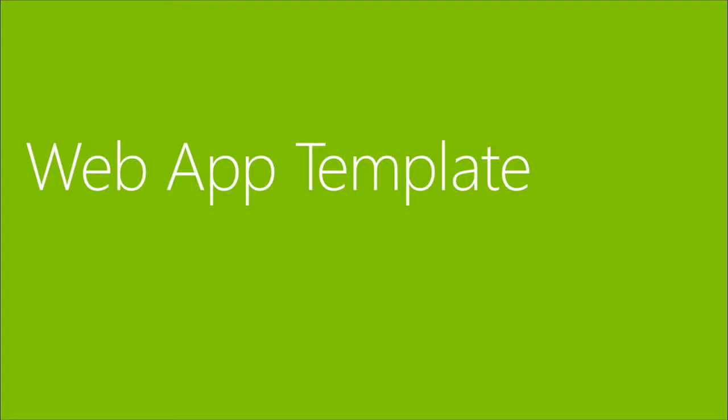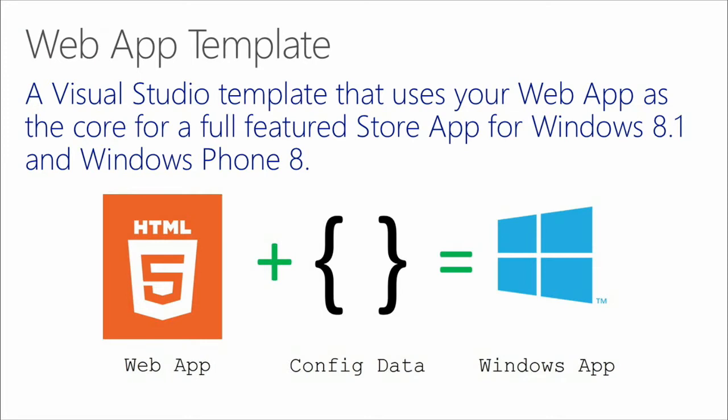If you are a web app developer and you want to bring your app to the Windows platform, we're going to talk about a new tool that Matthias and I have been working on along with a lot of other developers at Microsoft that makes that easier — it's called the Web App Template. The Web App Template basically allows you to take your web app, combine it with configuration data, and at runtime it puts your website together with that configuration data using a web view to turn it into a Windows Store app.